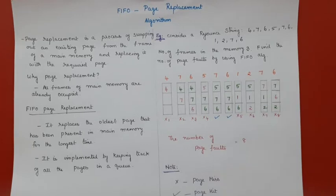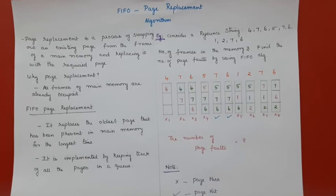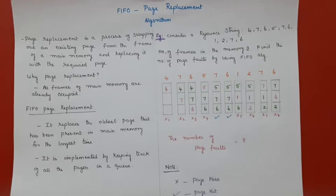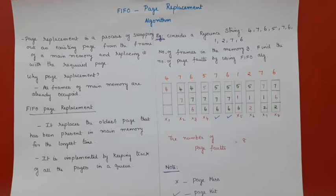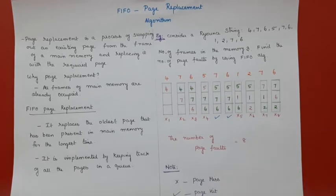The first algorithm we are going to see is the FIFO page replacement algorithm. It is one of the simplest algorithms. FIFO means first in, first out — whichever page comes in first has to go out first. It replaces the oldest page that has been present in main memory for the longest time, and it is implemented by keeping track of all pages in a queue.